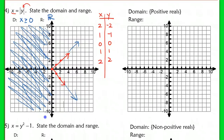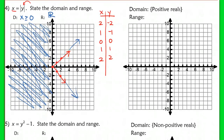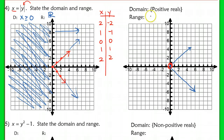If we restrict to positive reals for x, we're using all the same numbers for the domain, except that 0 will now have an open circle because 0 is not positive. Since 0 is not included, the range is all real numbers except y cannot equal 0.